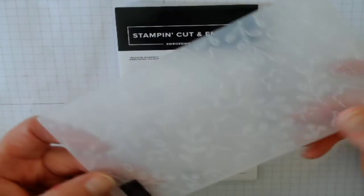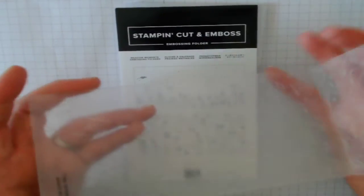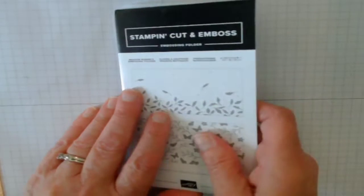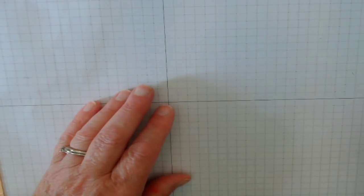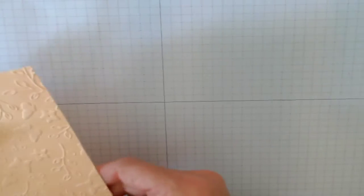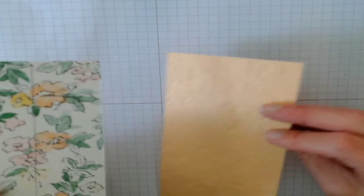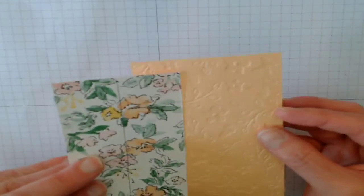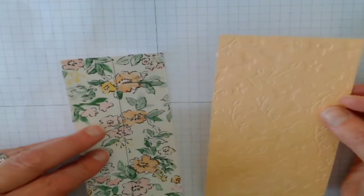You just stick your paper inside and then you run it through the cut and embossing machine. Now, if you don't know anything about our stamp and cut and emboss machine, you can go to my blog on creatingcardswithsheri.blogspot.com and the videos will share with you everything you need.